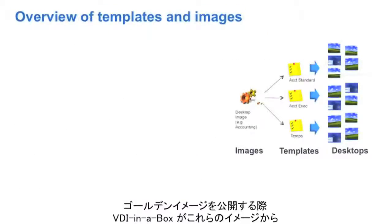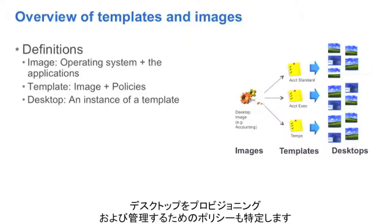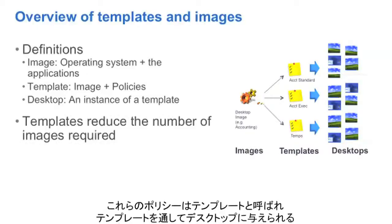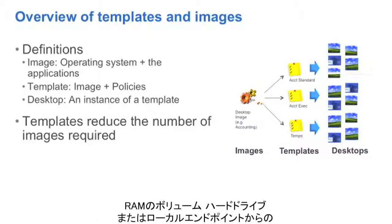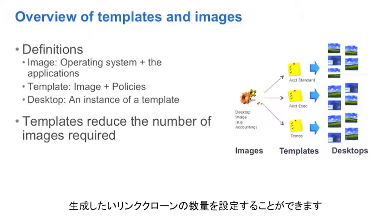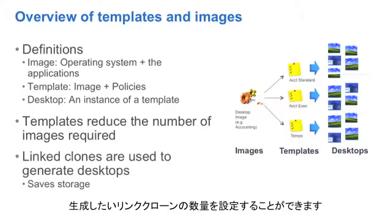Once we publish our golden images, we also specify policies for how VDI in a Box should provision and manage desktops from those images. These policies are called templates, and through the template we can set the amount of RAM given to the desktop, whether it will share the hard drive or other local resources of the endpoints, and how many linked clones you wish to generate based on these settings.